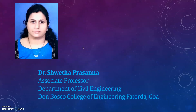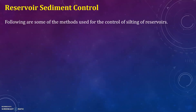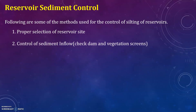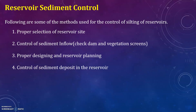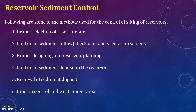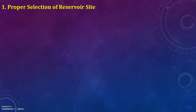Let us discuss some methods used for controlling silting of reservoirs. There are six methods: first, proper selection of reservoir site; second, control of sediment inflow; third, proper designing and reservoir planning; fourth, control of sediment deposit in the reservoir; fifth, removal of sediment deposit; and sixth, erosion control in the catchment area. Let us discuss them one by one.